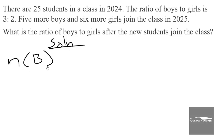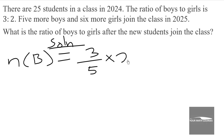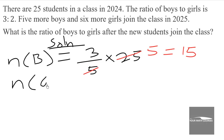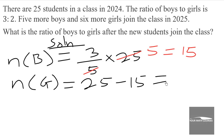First, we calculate the number of boys using the ratio value for boys, which is 3, over the total ratio of 3 plus 2, which is 5, times the total number of students, 25. So 5 goes into 25 five times; 3 times 5 is 15 boys. The number of girls will be 25 minus 15, which gives us 10.